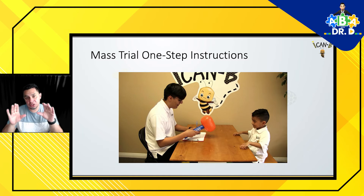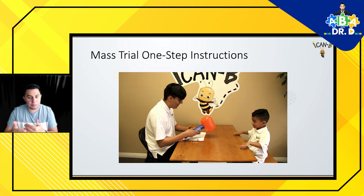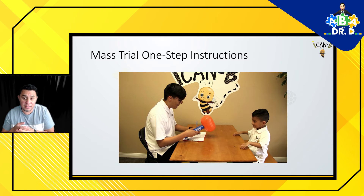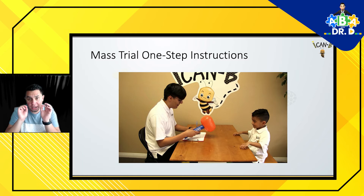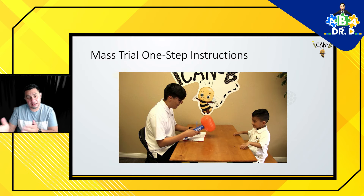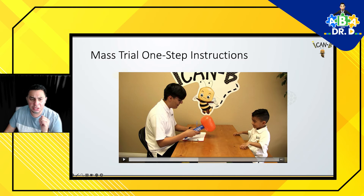Another really important thing is making sure you're working on some prerequisite skills when teaching these particular programs. In this example, we want to make sure a child is able to sit, attend, has eye contact, or can respond to some instructions — for example, their name. These are some prerequisite or required skills prior to these programs. Now let's keep watching a couple more mass trial instructions.